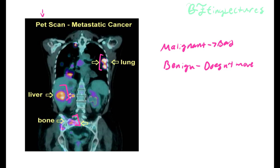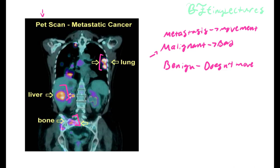You might also hear the term metastasis. Metastasis means movement — specifically, cancer movement. If we have cancer in the lungs, and over time this cancer divides and starts moving into the liver or into the bone, then you have a lower chance of surviving, and it's very difficult to get rid of this cancer. We call that metastatic cancer, and this is very, very bad.